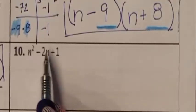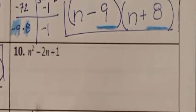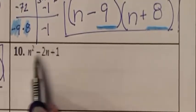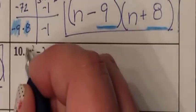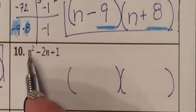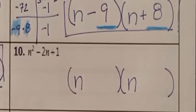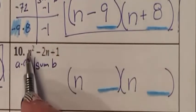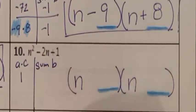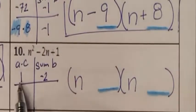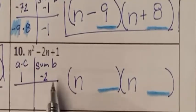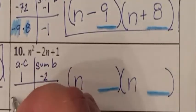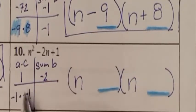Let's look at number 10. There is no GCF number in common and no GCF variable in common, so my GCF is a 1. Since A is 1, I can have my two parentheses. The only way to get N squared is N times N. A times C is 1, and my B is negative 2. What two numbers multiply to give me positive 1, but when I add them, I get negative 2?